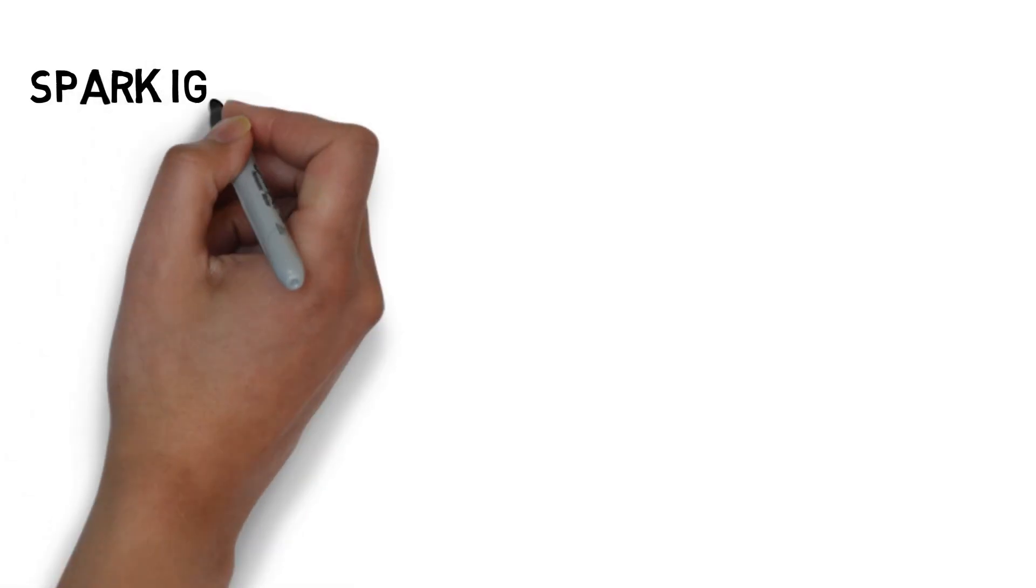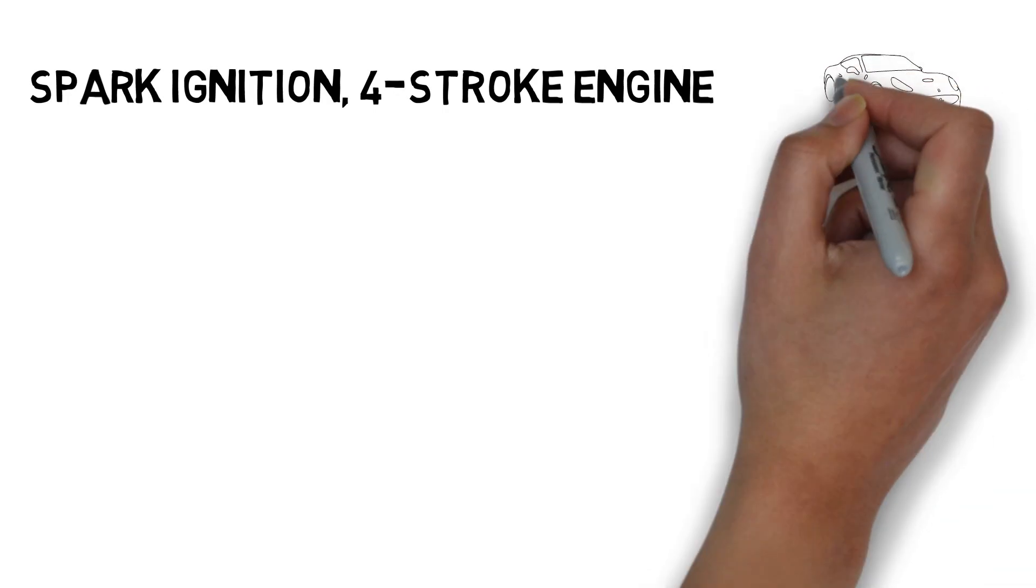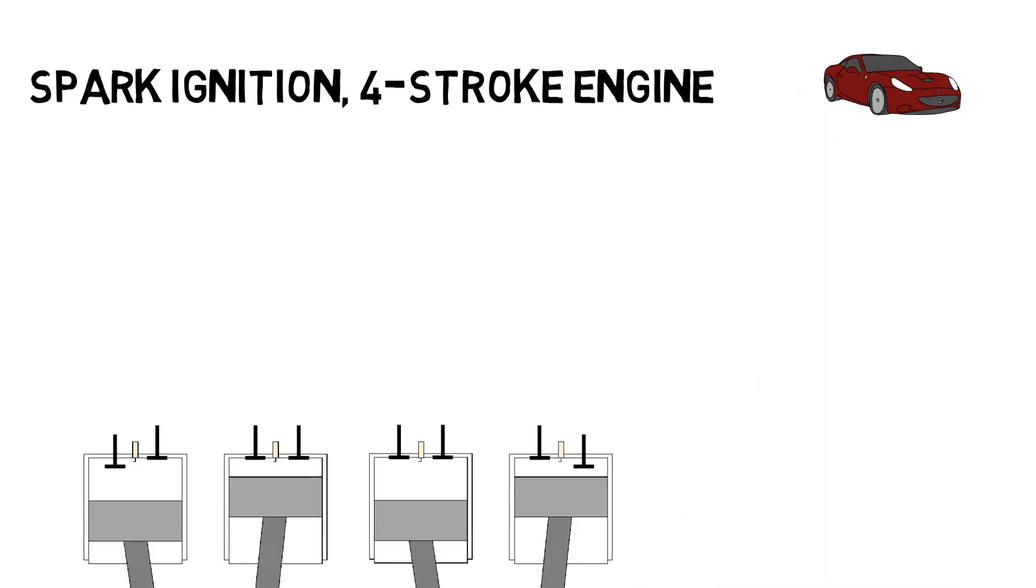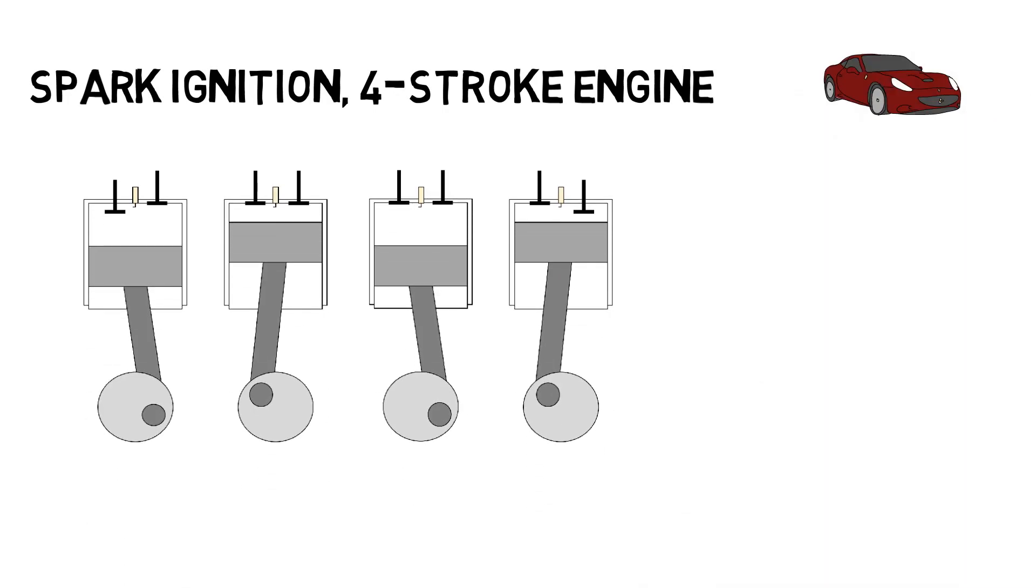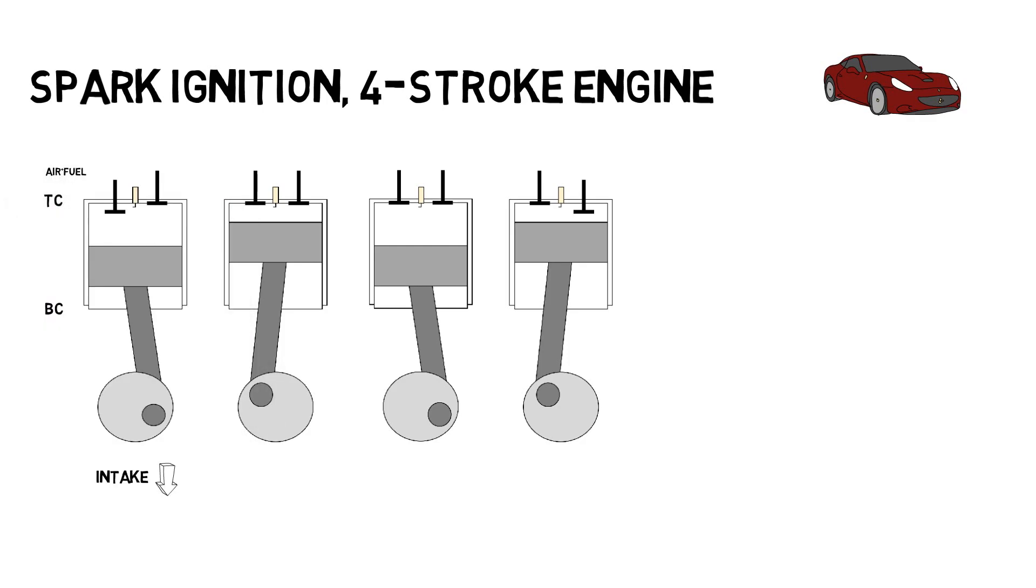First, let's look into the most widely used engine in automobiles, the spark ignition four-stroke engine. During the intake stroke, the intake valve opens and the piston travels downward from top center to bottom center, drawing fresh air and fuel into the cylinder.